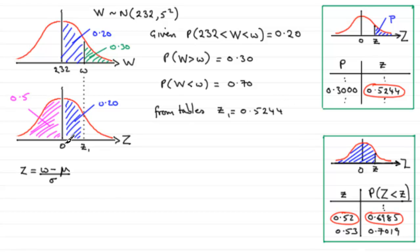of standard deviations we're away from the mean—we're 0.5244 standard deviations above the mean for this observed value. Now we just substitute this in, and we therefore have 0.5244 equals the observed value w, which we're trying to find, minus the mean, which is 232, over the standard deviation, which was 5. So we just need to rearrange this for w. If you multiply both sides by 5 and add the 232, you get that